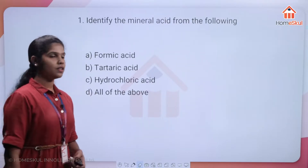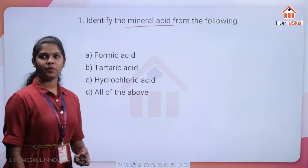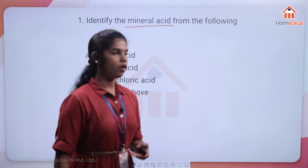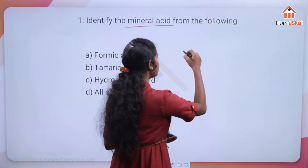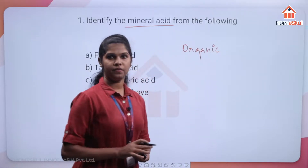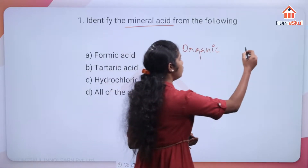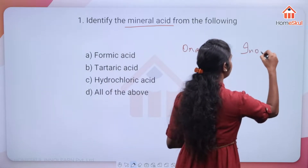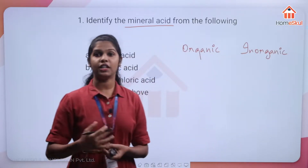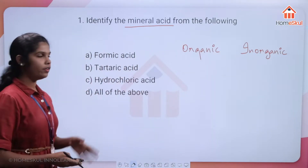What is a mineral acid? Acids are basically of two types: organic and inorganic. Organic acids contain carbon, and inorganic acids do not. Mineral acids are examples of inorganic acids — they are also called inorganic acids. We need to know the formula of every acid.